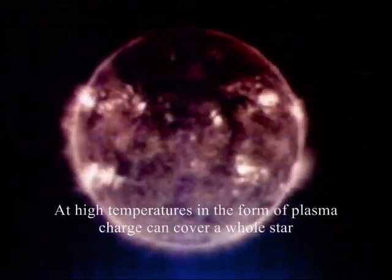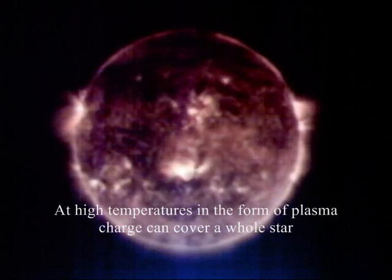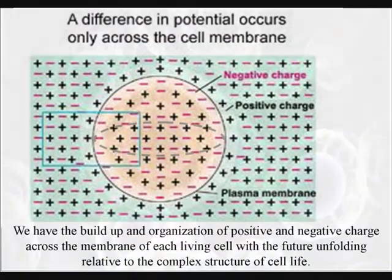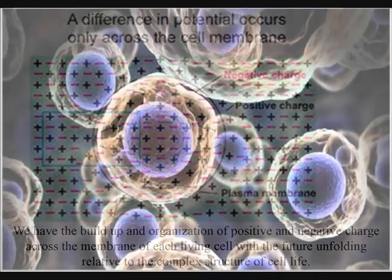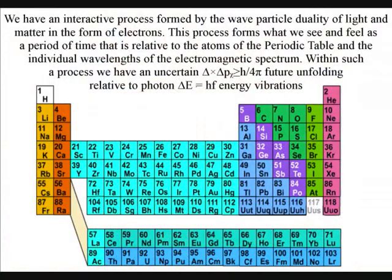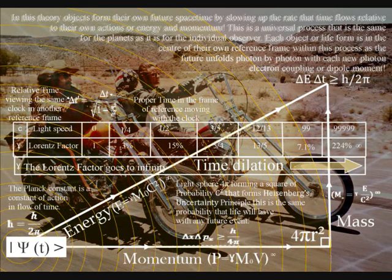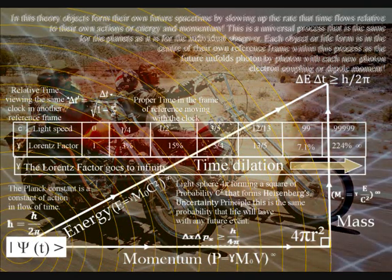This process is totally universal and interactive. From the largest object to the smallest creature, right down to the smallest element of the periodic table, all will slow the rate that time flows, forming a curvature of spacetime relative to its own energy or mass.